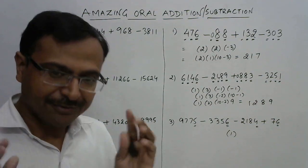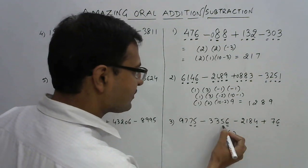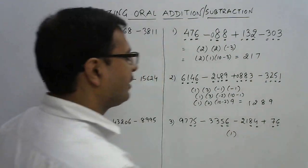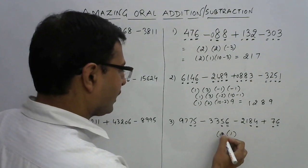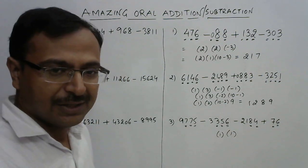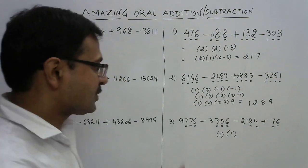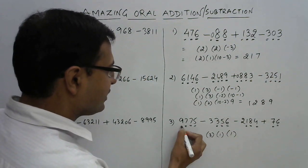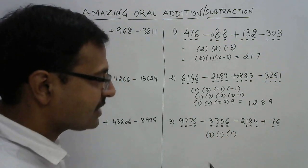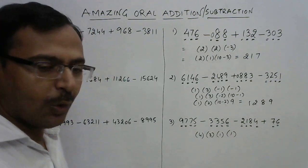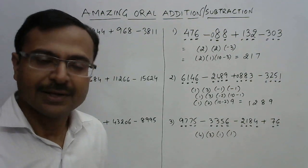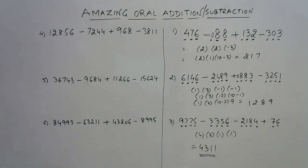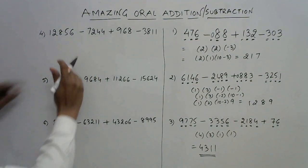Next: 7 minus 5 is 2, 2 minus 8 is minus 6, and minus 6 plus 7 is 1. Next digit: 7 minus 3 is 4, 4 minus 1 is 3, and we don't have a third digit here so it remains 3. Finally, the fourth digit: 9 minus 3 is 6, 6 minus 2 is 4. When all digits are positive, that is your answer directly — so the answer is 4, 3, 1, 1.